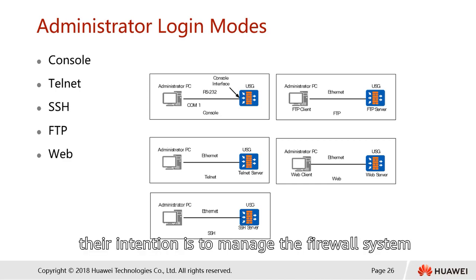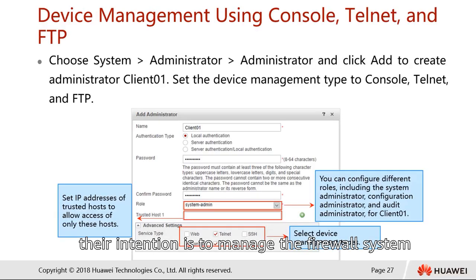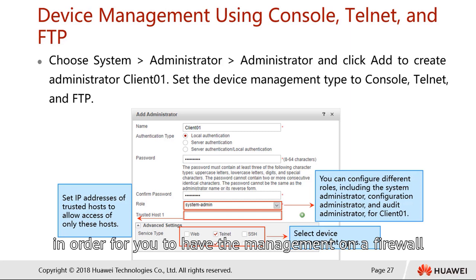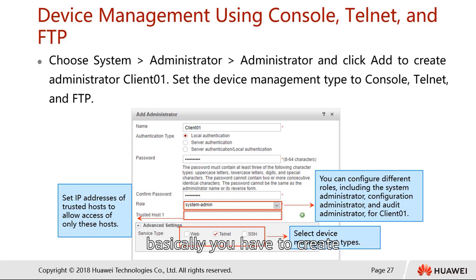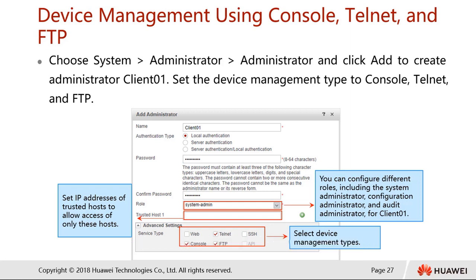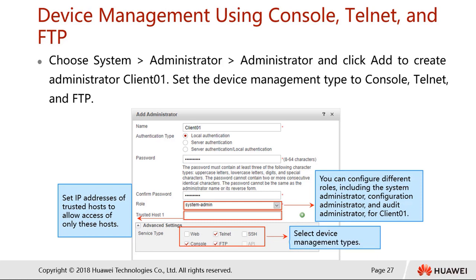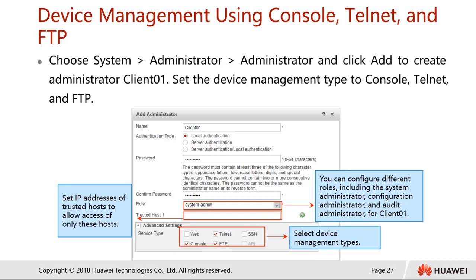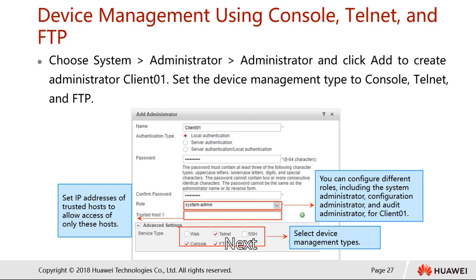In order to have management access on the firewall, you have to create or enable the administrator account. To do that, go into the USG firewall web user interface. Under the system, choose Administrator, then go to Add to create an administrator. For example, we create an administrator account with a name called client01. The authentication type can be local, server authentication, or both, followed by the password and the role for this administrator.